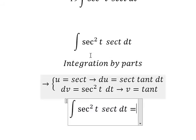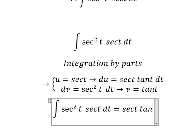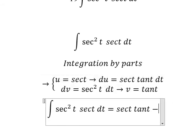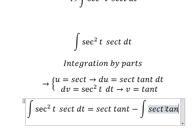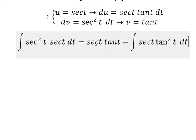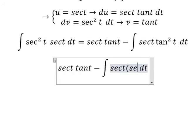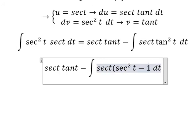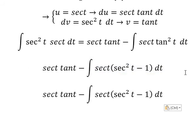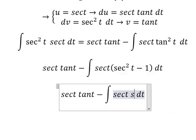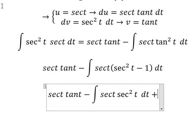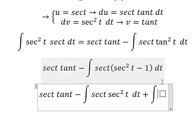Applying integration by parts, we have u times v giving sec(t)·tan(t), minus the integral of v·du, which is the integral of sec(t)·tan²(t)·dt. We expand tan²(t) by replacing it with sec²(t) minus 1. This splits into two integrals: the first and the second. Because negative times negative gives positive in the second part.